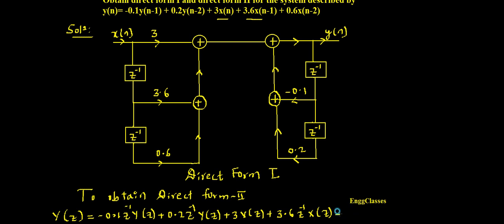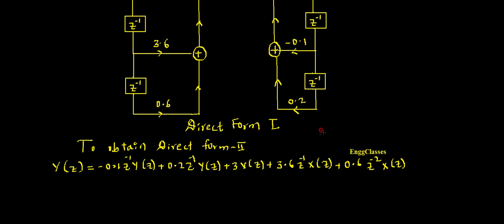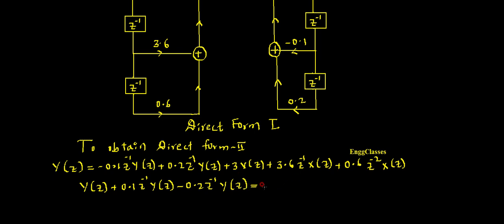Plus 0.6·x(n-2), taking the Z-transform, leads to 0.6·z⁻²·X(z). Now I have to regroup them — group the Y(z) terms together and the X(z) terms together. So I get: Y(z) + 0.1·z⁻¹·Y(z) - 0.2·z⁻²·Y(z) = 3·X(z) + 3.6·z⁻¹·X(z) + 0.6·z⁻²·X(z).